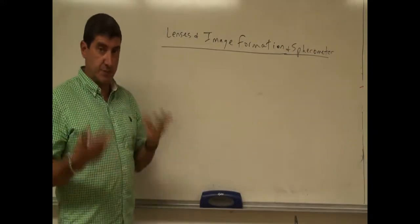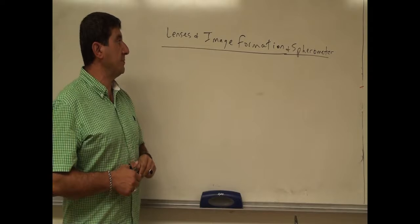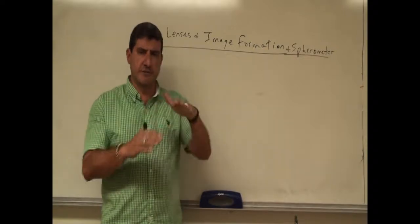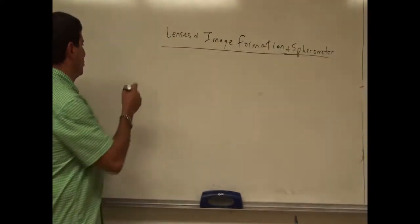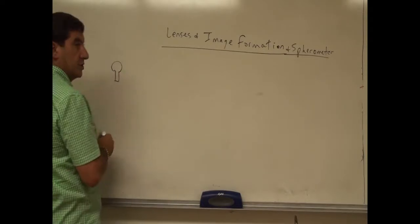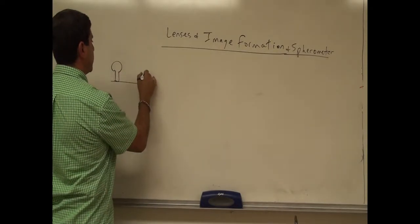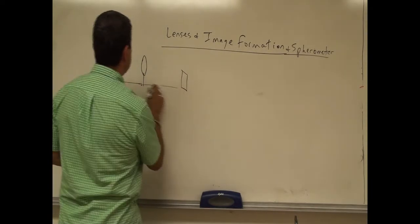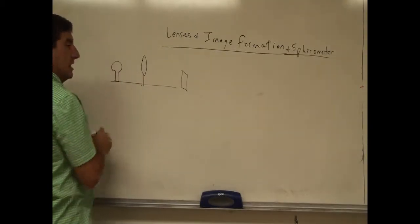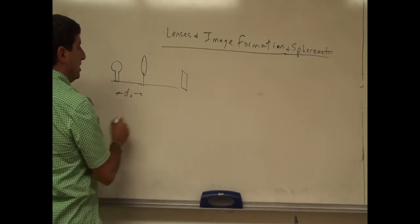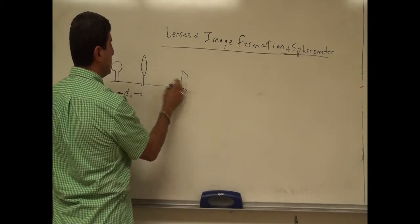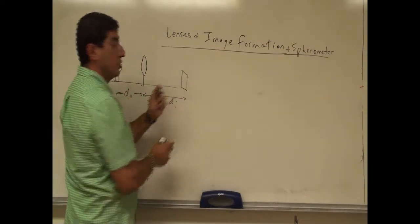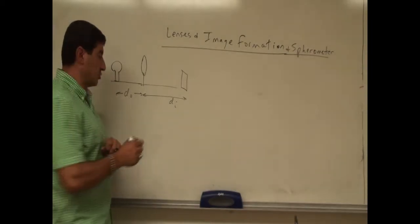Welcome back. The demo I'm going to do now is an actual experiment that we do in class. It's called lenses and image formation and the use of the spherometer. We illustrate the use of the spherometer to determine the curvature of a converging lens. We're going to put a light bulb as our source of light, then a converging lens, then a screen. We can move the distance between the lens and the light bulb — that's called DO — and adjust the distance between the screen and the lens — that's called DI — until we get a sharp image. Then we're testing the equation.